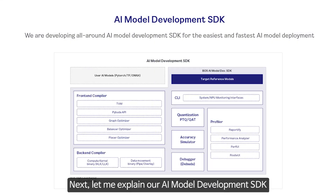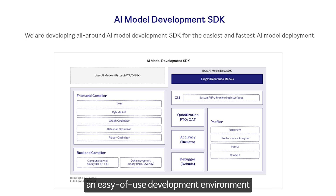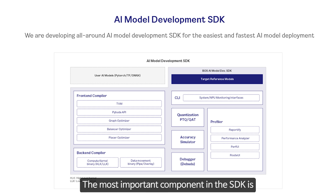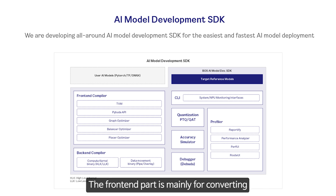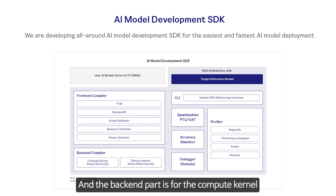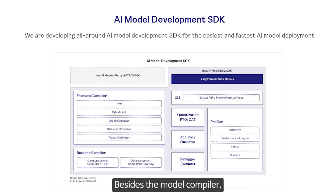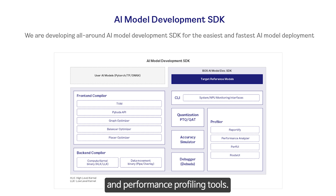Let me explain our AI model development SDK in more detail. Our SDK is designed to provide an easy-to-use development environment for the fastest AI model deployment. The most important component is the model compiler, composed of a front-end and back-end. The front-end converts users' pre-trained models to our MPU-specific intermediate representation and performs graph-level optimization. The back-end generates compute kernel and data movement kernel binaries for efficient execution. Besides the model compiler, the SDK includes target reference models, quantization accuracy tuning tools, and performance profiling tools.